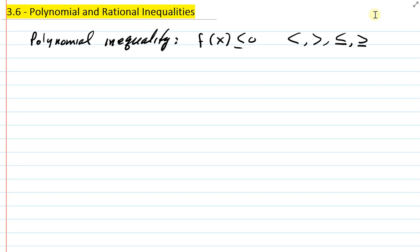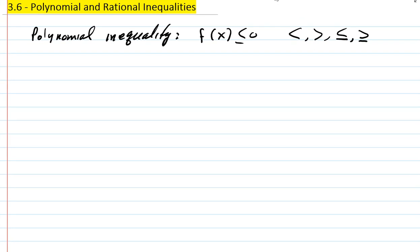We are interested in solving polynomial and rational inequalities in this lecture. Let's begin with polynomial inequalities. The general form is any inequality where f of x is a function, but we're going to focus on polynomials. The inequality symbols we are interested in are the four types: less than, greater than, less than or equal, and greater than or equal. The work we do applies to all four.